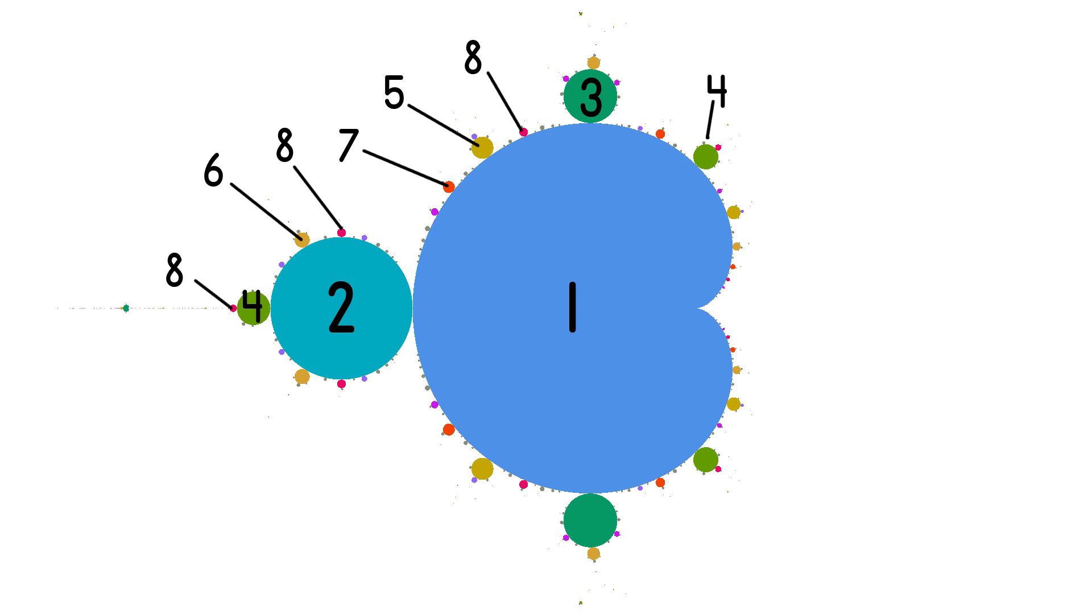The Mandelbrot set is a notable example of a complex result emerging from simple rules. Another one is Langton's Ant, which I present in the linked video.